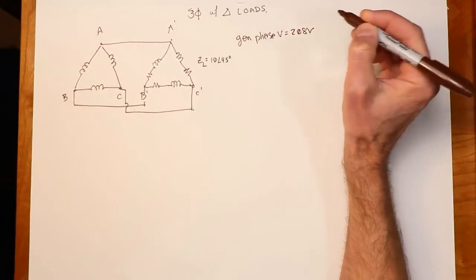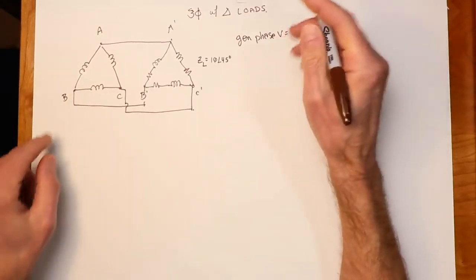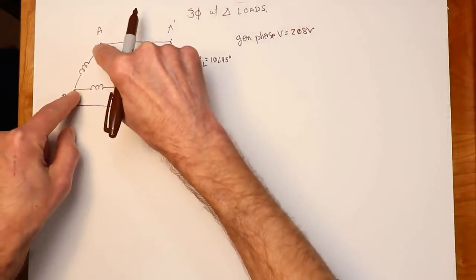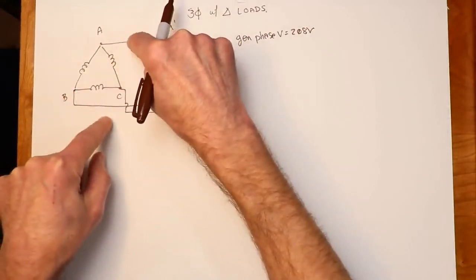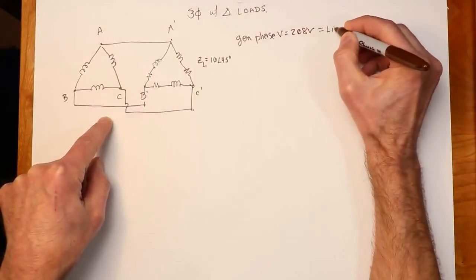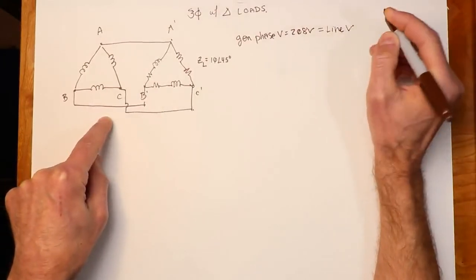So we're going to connect A to A prime, B to B prime. Now, I'm going to set this up for the same line voltage that we had in the preceding example. In other words, I'm going to set up a generator phase voltage of 208.